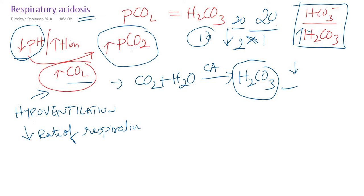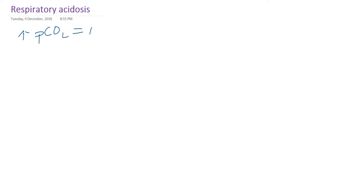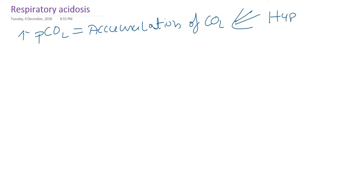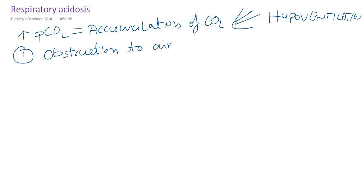So how does this accumulation of carbon dioxide occur? There will be a decreased respiratory rate — in other words, hypoventilation. Now we are going to study the causes of respiratory acidosis. The accumulation of carbon dioxide is due to hypoventilation. We need to see what conditions cause a decreased respiratory rate. Number one: if there is any obstruction to airways, there will not be normal respiration and there will be accumulation of carbon dioxide.